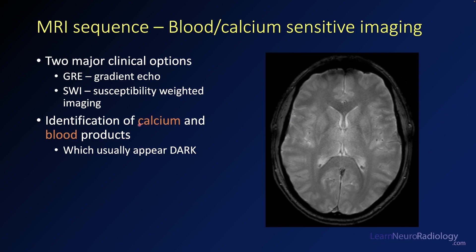Blood- and calcium-sensitive imaging is useful for seeing areas where the local magnetic field is distorted. Most commonly this is from calcium or blood products, which tend to appear dark. On a regular gradient echo image you can see a little bit of calcification in the choroid plexus and dark signal around vessels. So blood products and calcium will be dark on these sequences.